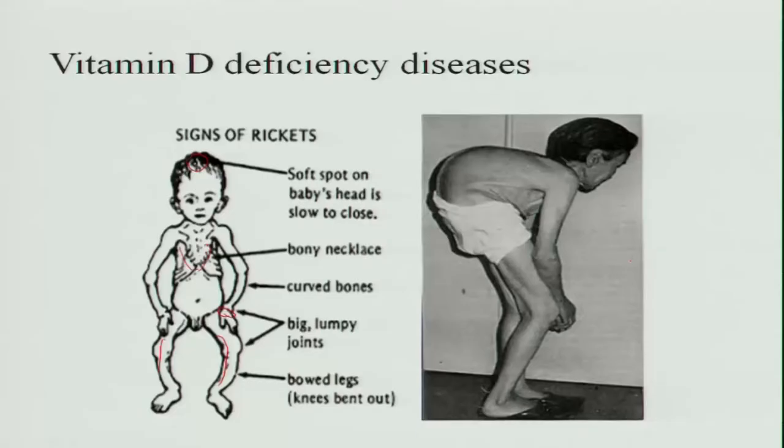In adults, the bones become weak and the person is almost bent. These are the various forms of vitamin D and its very important functions throughout the body from head to toe. It has so many functions and the important source is sunlight, so some exposure of the body to sunlight is very important. For infants especially, vitamin D is critical because its deficiency causes softness of bone and permanent deformity in the body. Thank you.